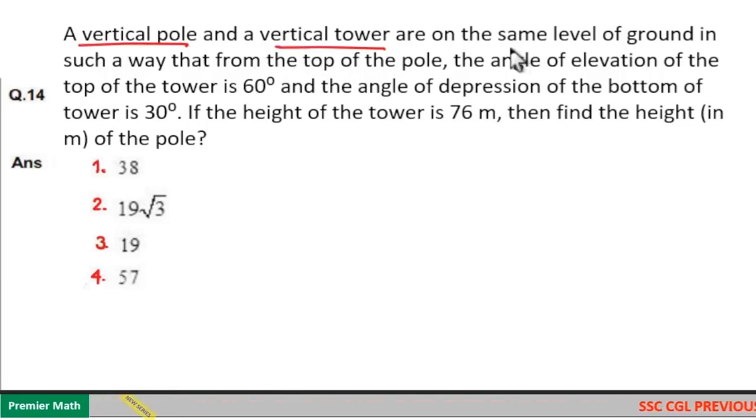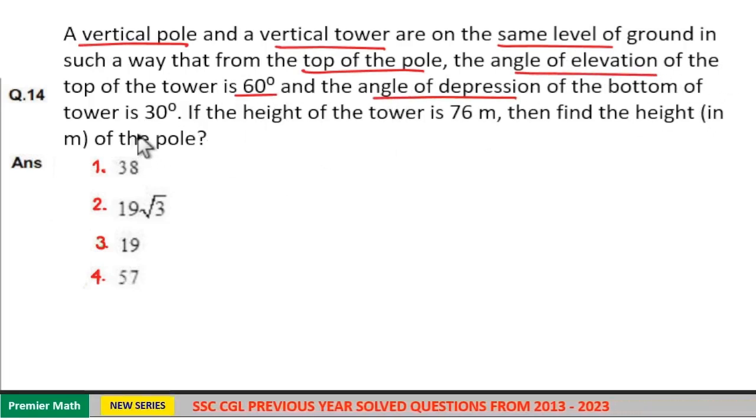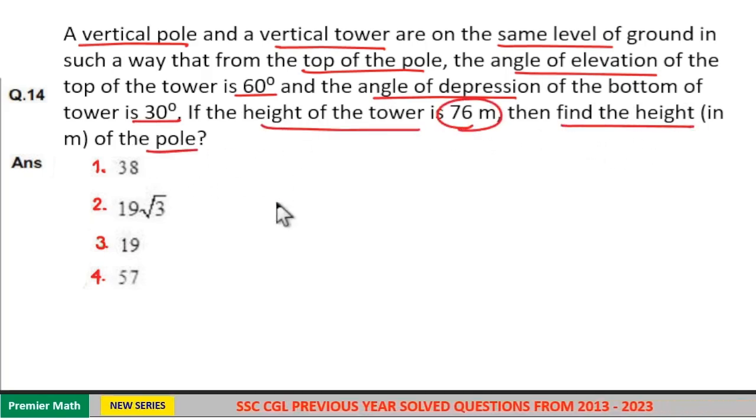A vertical pole and a vertical tower are on the same level of ground in such a way that from the top of the pole, the angle of elevation of the top of the tower is 60 degrees and the angle of depression of the bottom of the tower is 30 degrees. If the height of the tower is 76 meters, then find the height of the pole.